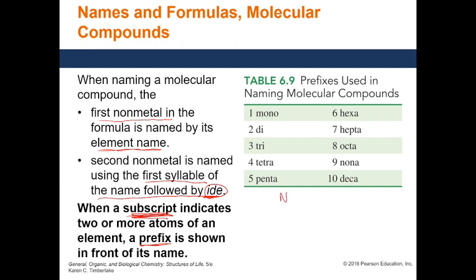For instance, let's take the compound NO. How do I know it's molecular? First, N is a non-metal and oxygen is also a non-metal, meaning this is a molecular compound. To name it, we follow the two rules: the first non-metal written in the formula is nitrogen, so we use the name 'nitrogen'.